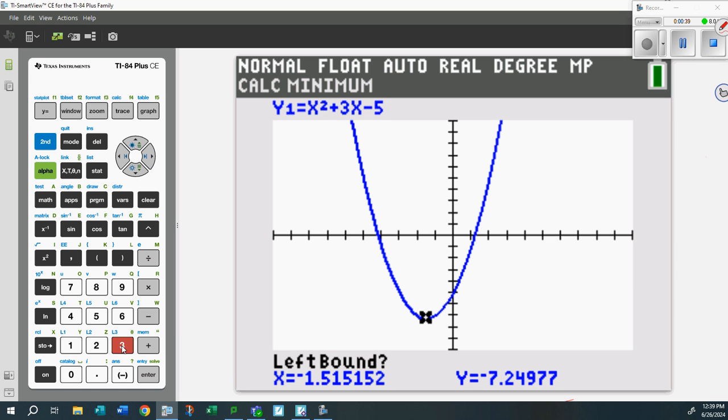It asks what's the left bound and right bound. Simple - you want to go left of where the vertex is. Go to the left side of it, that's the left bound, hit ENTER. Then find the right bound - this helps the calculator zoom in on what you're trying to find. Go to the right side, hit ENTER.